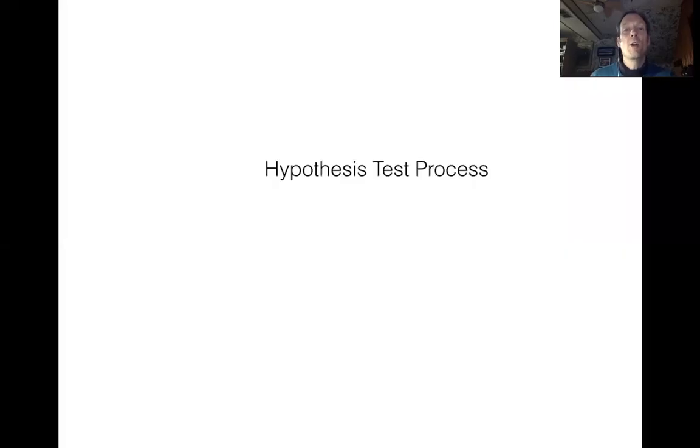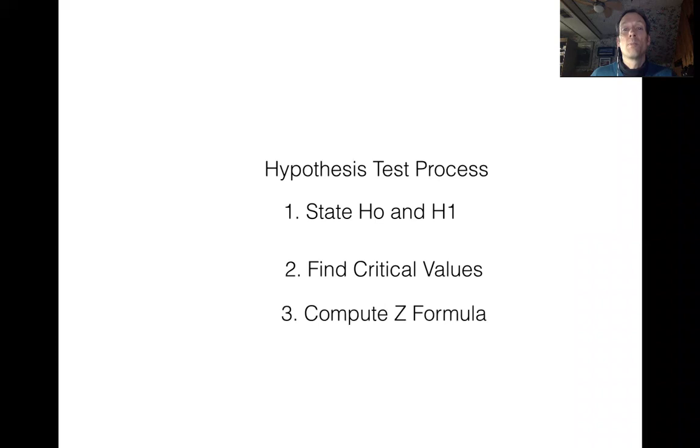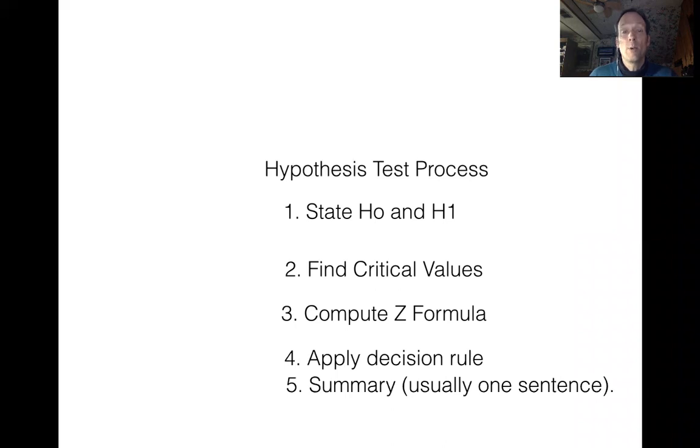Hey everybody, Professor Mankowski here, and in this video we're going to continue our introduction to the hypothesis test process. To recap what we learned in the last video, we found out that the hypothesis test process consists of five steps: stating your HO and your H1 (or your null and alternative hypothesis), finding your critical values, computing your Z formula, applying a decision rule, and then creating a qualitative summary of what happened in the preceding four steps.